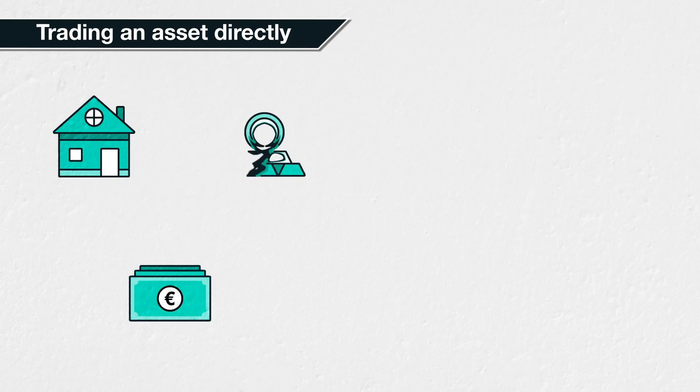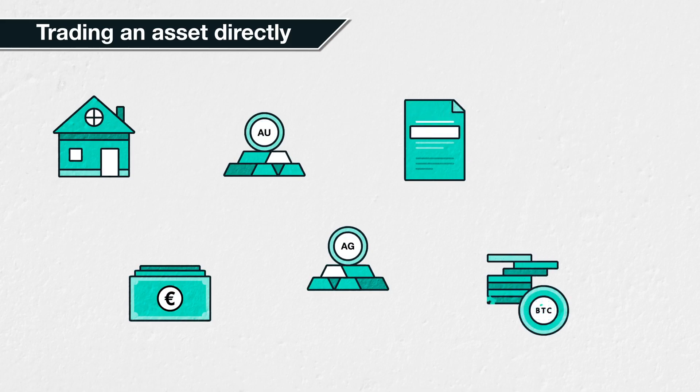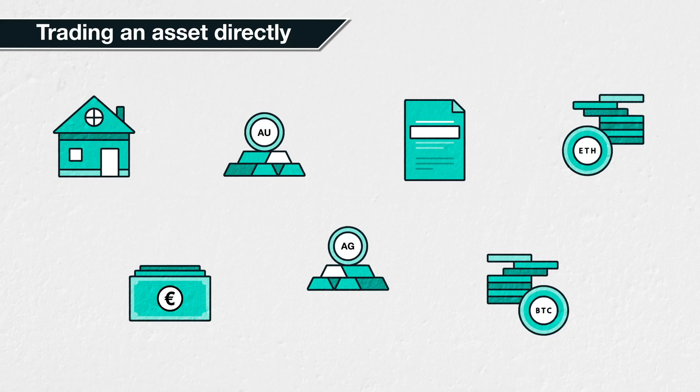The most basic form of trading is buying or selling an asset directly. This asset could be real estate, another currency, gold and silver bars and coins, stocks and shares, or even new digital assets such as bitcoin or other cryptocurrencies. When trading an asset directly, you will exchange the currency or asset you already own for another one.